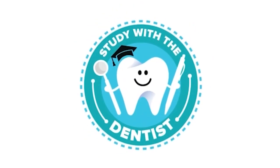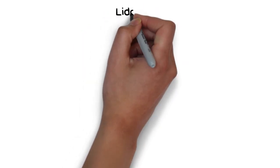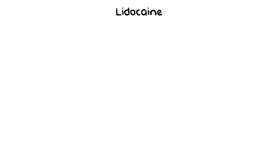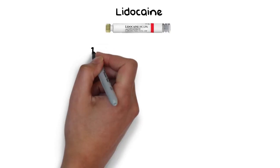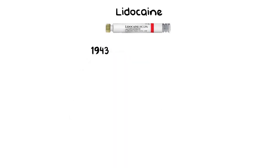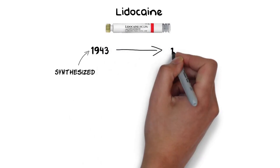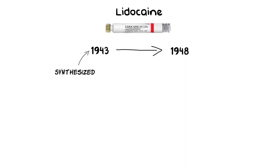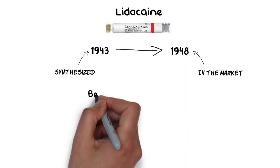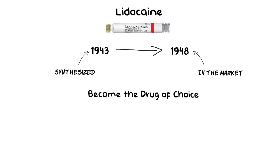Hello and welcome back everyone. Lidocaine local anesthetic is currently the most widely used and the most widely available local anesthetic in the market. Lidocaine was first synthesized in 1943 and in 1948 was made available as the first amide local anesthetic. It quickly replaced procaine as the drug of choice for pain control in dentistry.